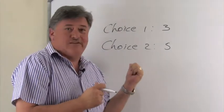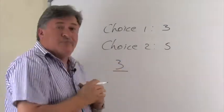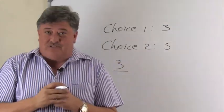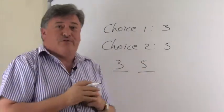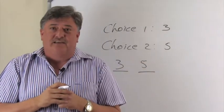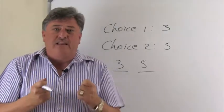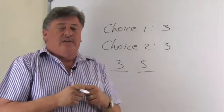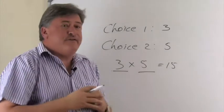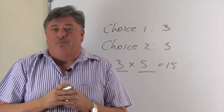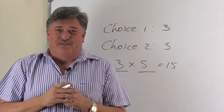We're going to say for task number one there are three ways to perform it, and for task number two there are five ways, according to the fundamental counting principle. So how many different meal combinations? We multiply, and that gives us 15 different meal combinations. And I'm sure you will agree this is very easy.